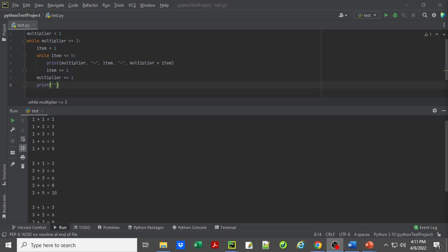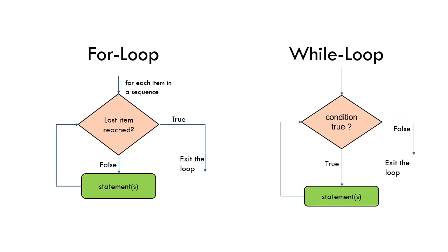That's all for this video. To recap: we talked about while loops and their use cases. To compare them against for loops — as we can see in this flowchart — a for loop runs for a fixed number of iterations, but a while loop runs for unknown iterations until the stop condition is met. When we enter a while loop, it checks whether the condition is true. If true, it executes the body and goes back to check again. As long as the condition is true, it keeps running. When the condition becomes false, it exits the while loop. Although the two loops are different, we showed examples of how a while loop can also produce the same output as a for loop.